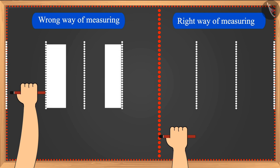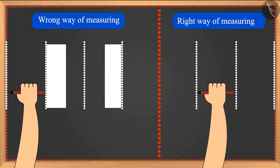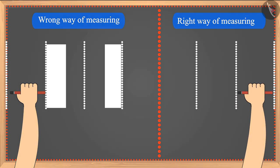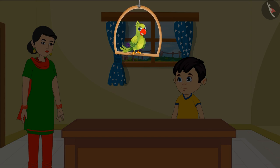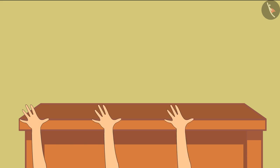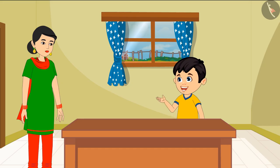We should measure without leaving any blank space. Today, Chotu is measuring the length of the table at his home using his hand span: one, two, three, four. 'Mummy, this table is four hand-spans long!'